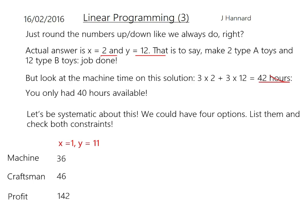If we have x = 1 and y = 11, then we get machine time = 36 and craftsman time = 46, giving a profit of £142. The 46 is less than 50 — good. The 36 is less than 40 — good. So that one works. Now let's try x = 1 and y = 12. We get machine time = 39 — that's okay. Craftsman time = 50 — that's okay too. That gives an overall profit of £154.